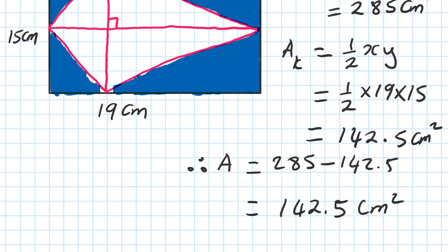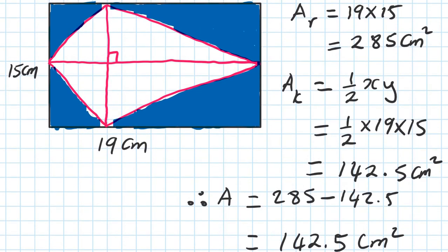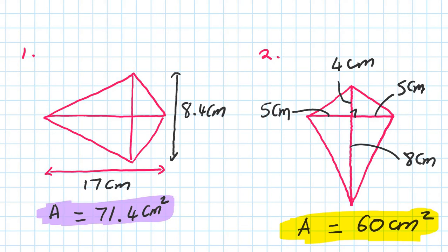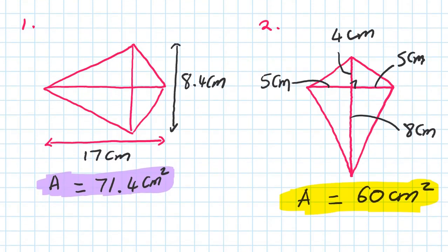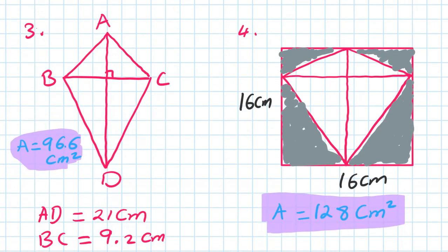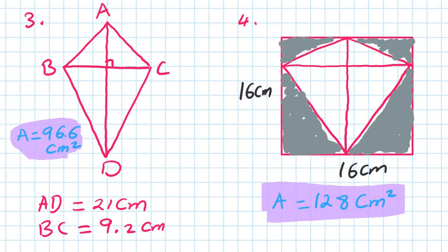That is how you find the area of this shape. I want you to try four practice questions. Answers are highlighted so you can check. You must show your working out — it's about the process. Number four is area of a kite inside a square, so find the shaded area. Thank you so much for watching.